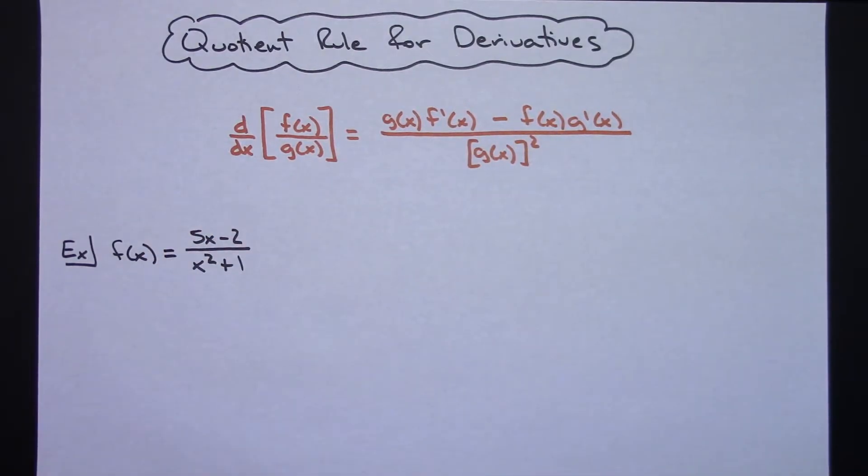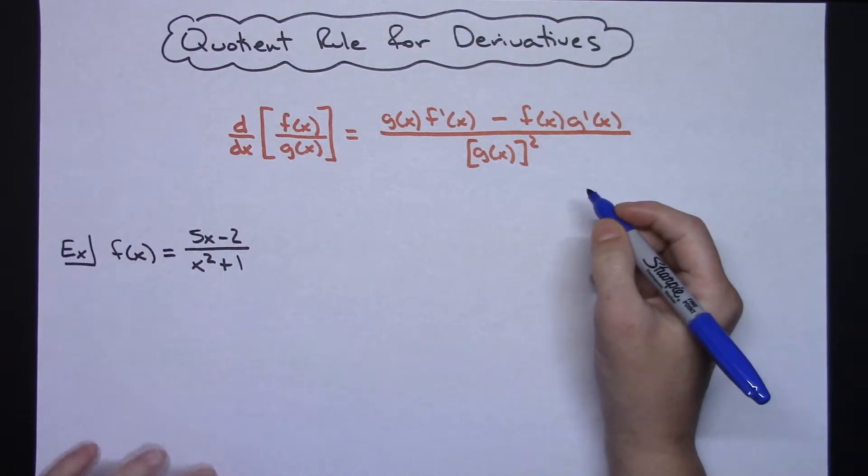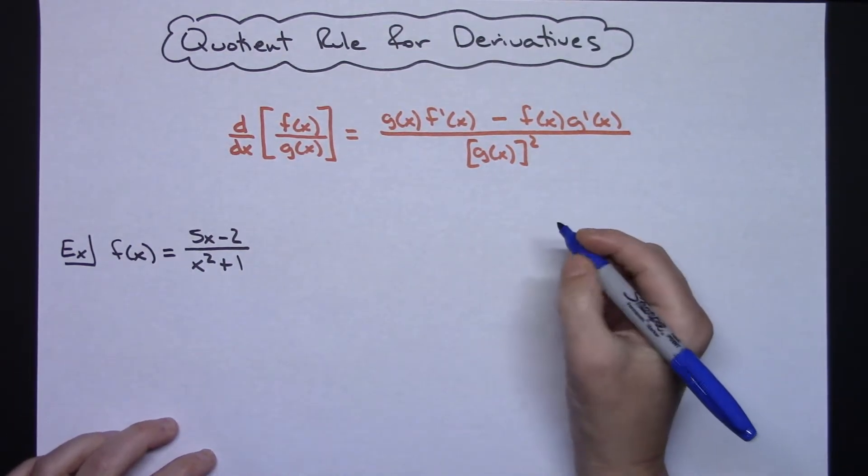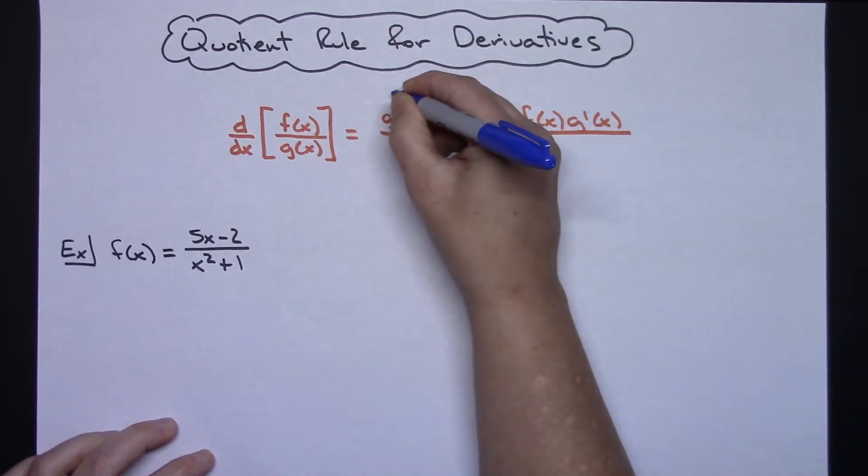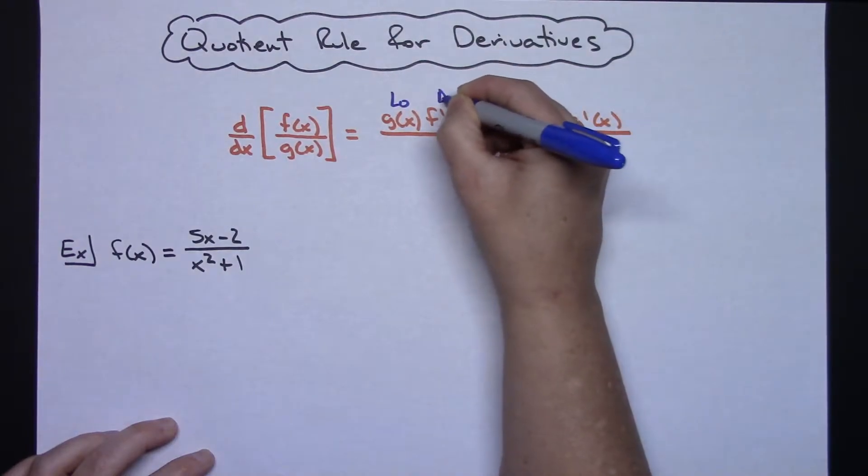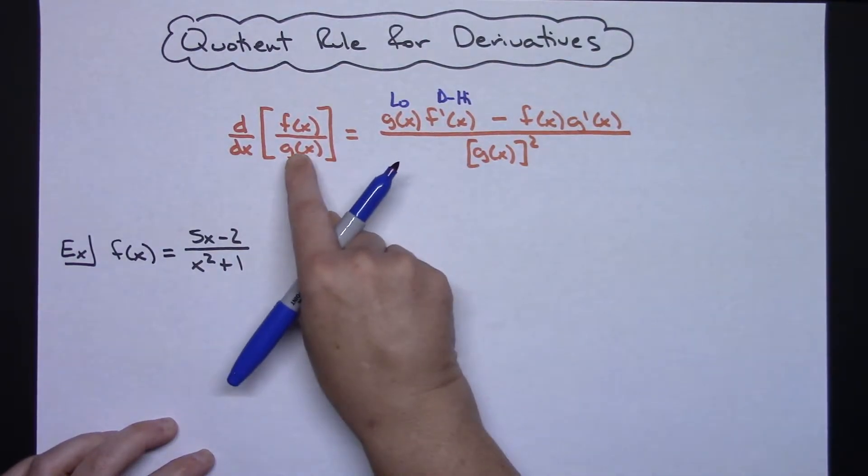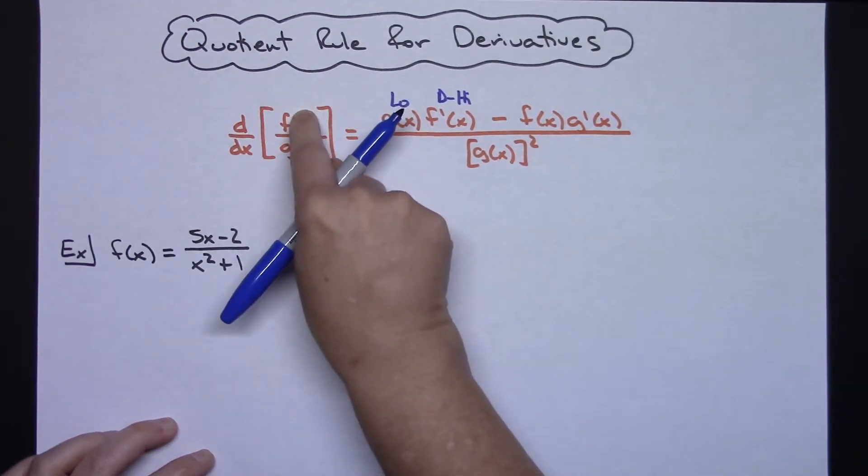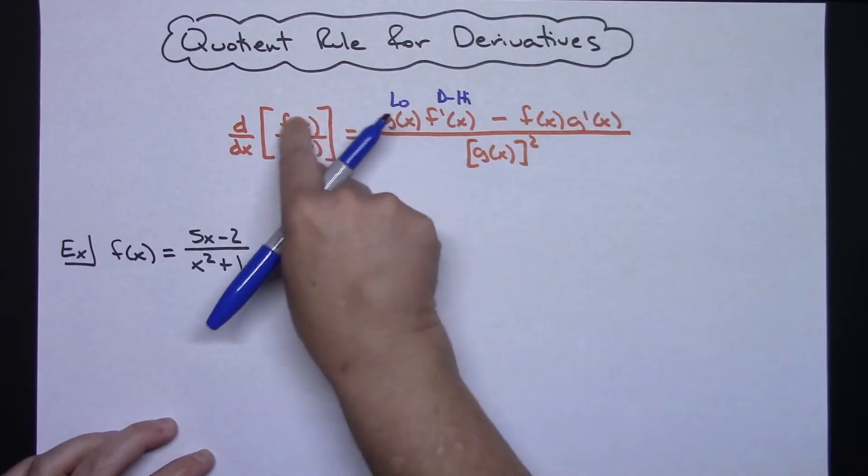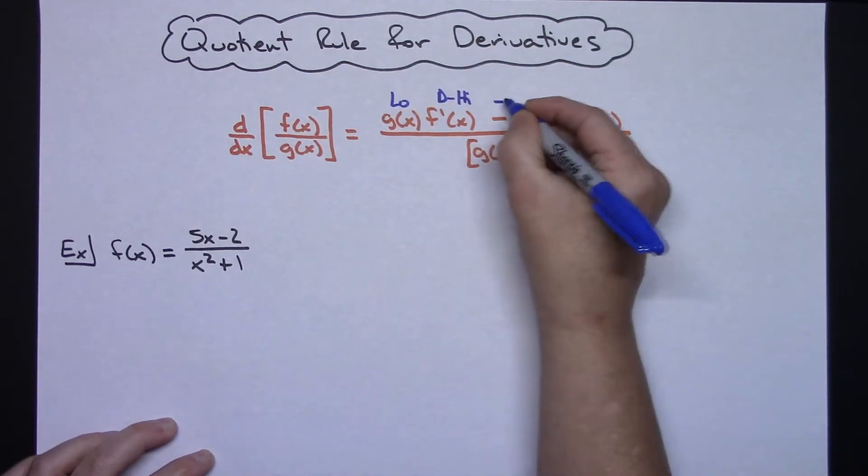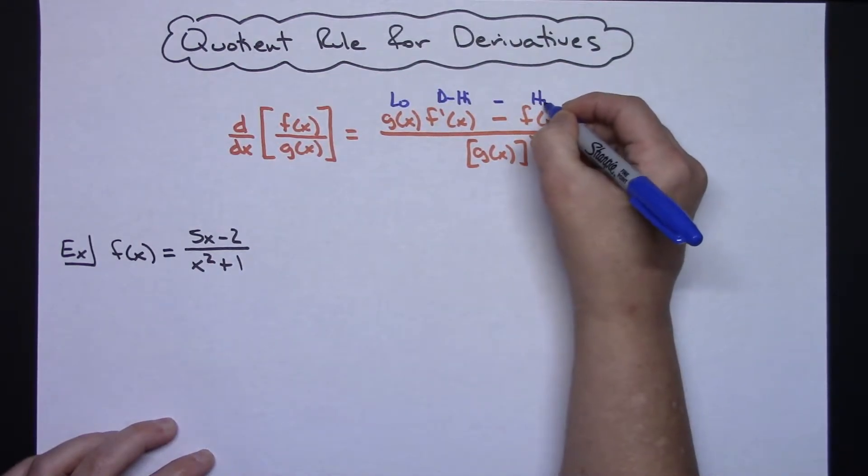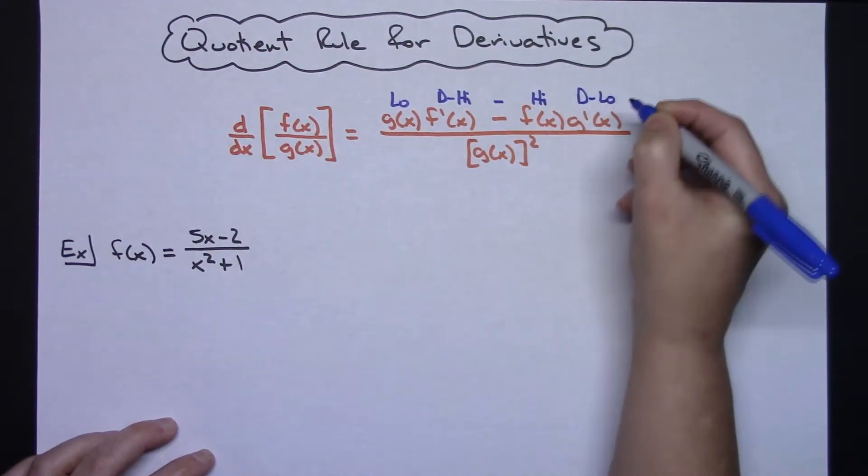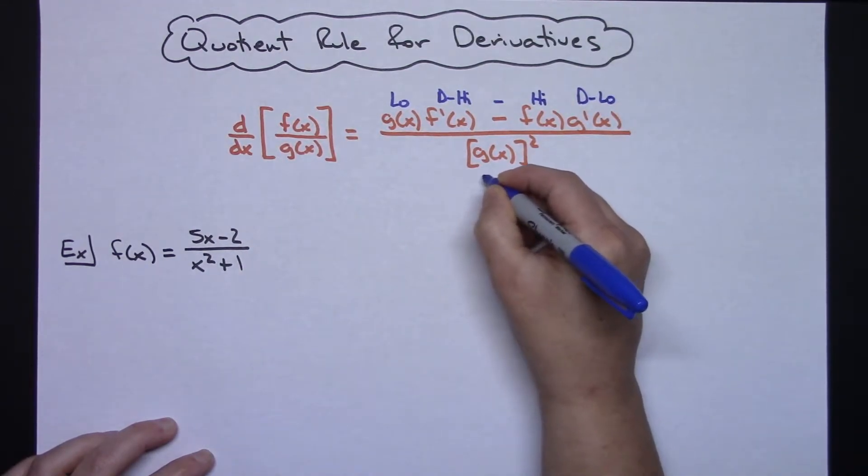Okay, so a pretty straightforward formula that you are going to have to memorize. Now a really good way to memorize this would be a kind of a cute little saying here: low d high, meaning low, what's on the bottom, times d high, which would be the derivative at the top, minus high d low, all over low squared.